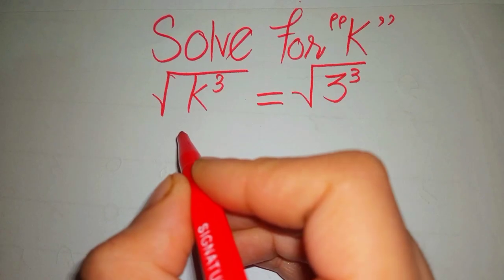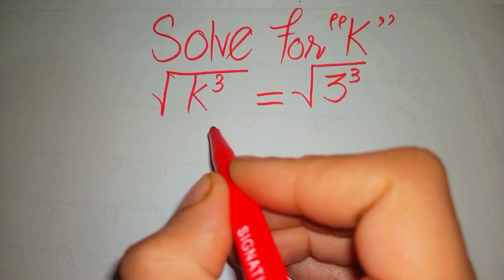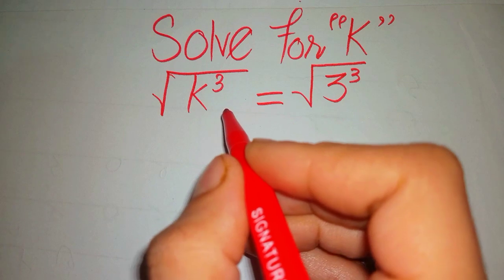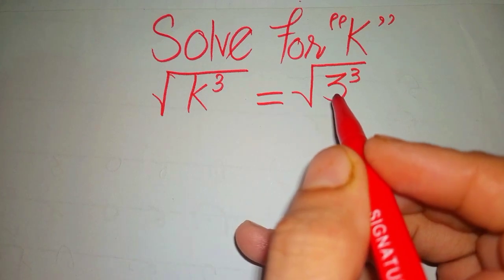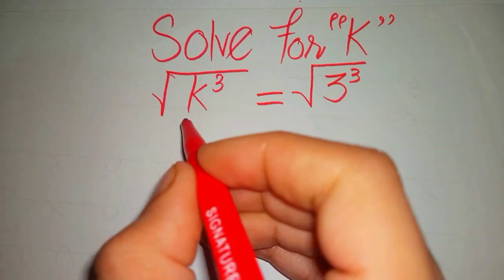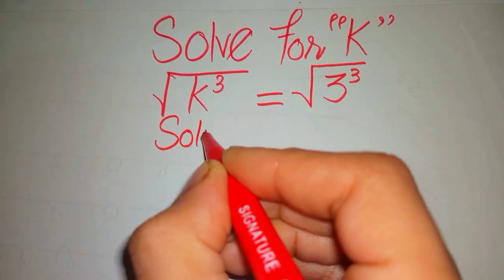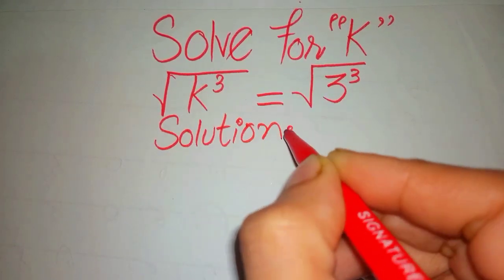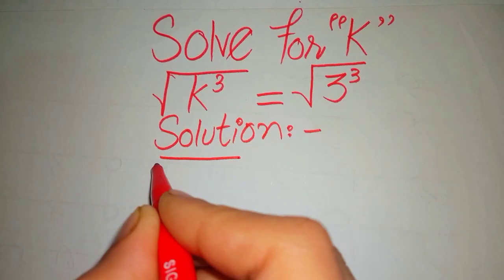Hi guys, welcome to my channel. We'll be solving this nice math olympiad algebra equation: square root of k cubed equals square root of 3 cubed. Now let's start our solution.